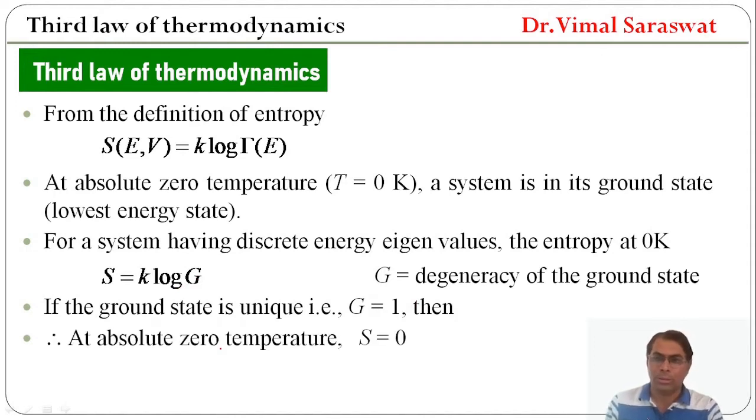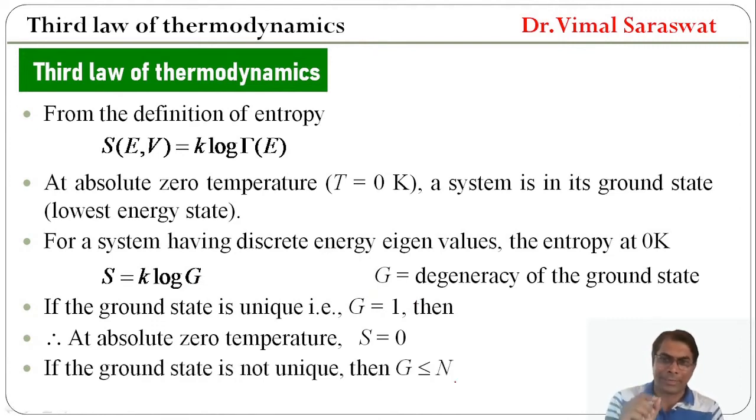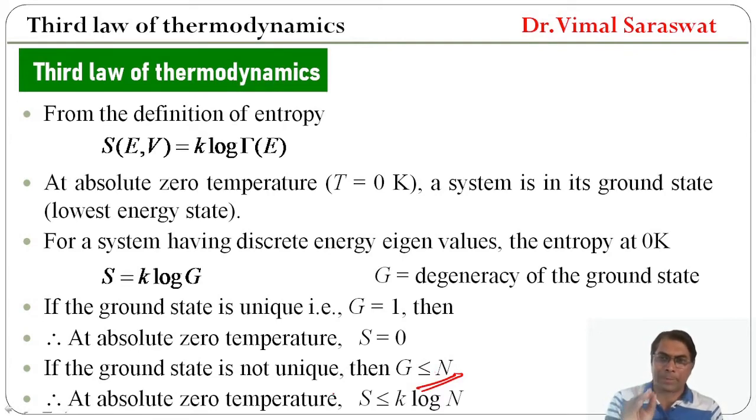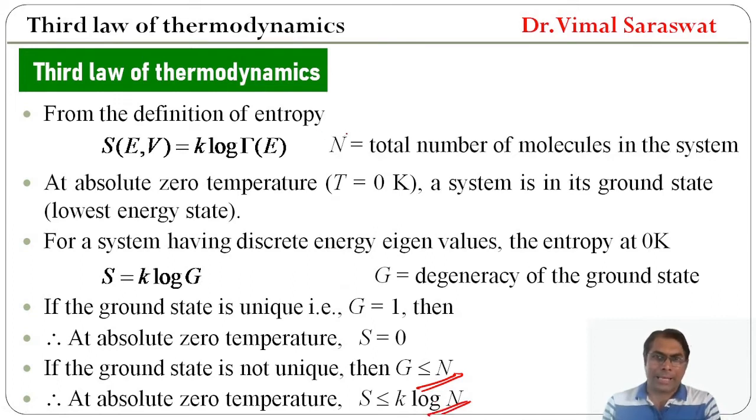So at absolute zero temperature, S equals 0. But if the ground state is not unique, then G is less than or equal to N, and therefore at absolute zero temperature, the entropy of this particular system will be S is less than or equal to k log N. What is N? N is actually the total number of molecules in this system.